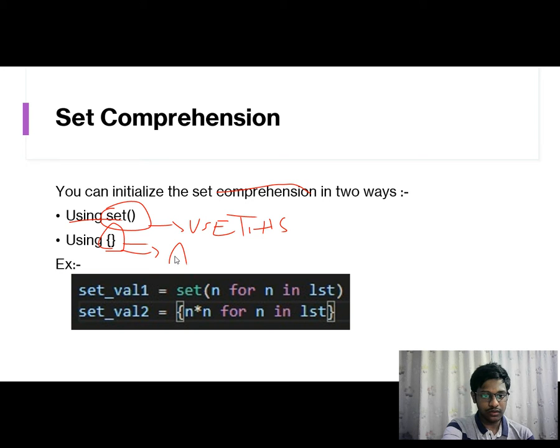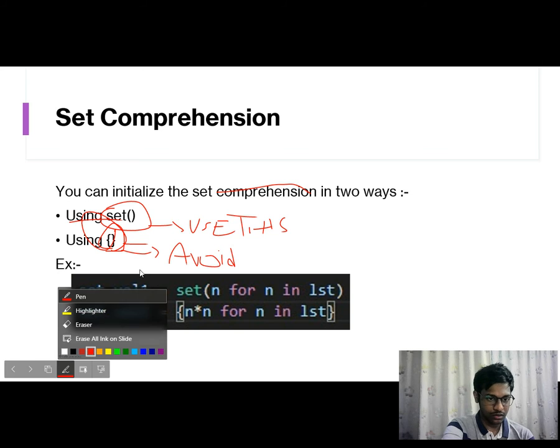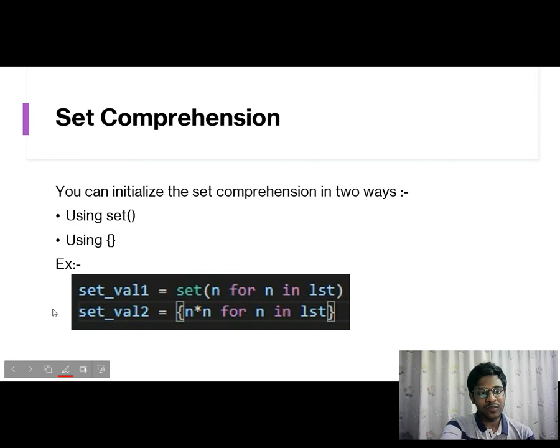I try to avoid using curly braces because mainly we use them for dictionaries for key-value pairs. So I might try to avoid it so that it won't throw an error. These are examples of set comprehensions.